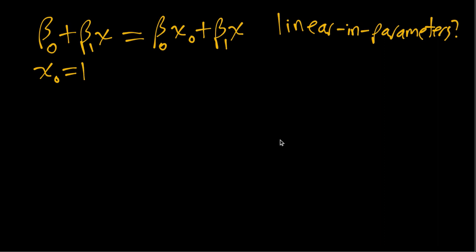Well it is if it's a linear combination of the parameters. So here the parameters are beta naught and beta one. So we can write this as something times beta naught plus something times beta one. That's a linear combination of beta naught and beta one and that's exactly what we have here.